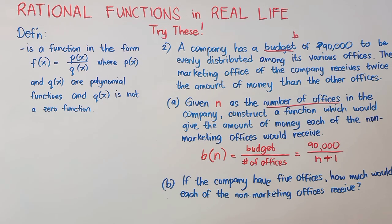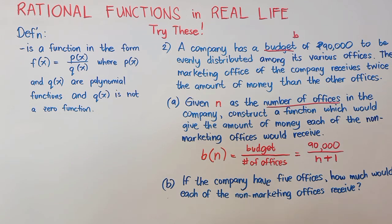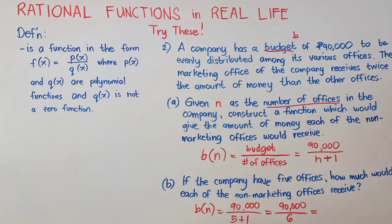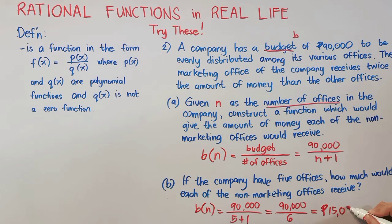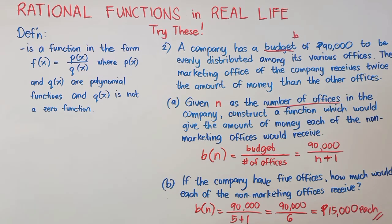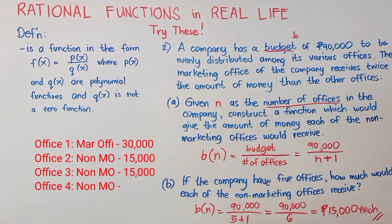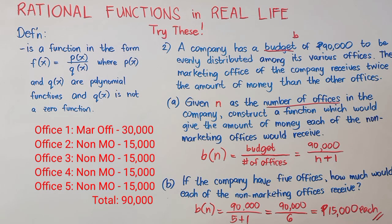Now, let's have B. If the company have 5 offices, how much would each of the non-marketing offices receive? Now, we will be using our function in A where our N is 5. So, we have here 90,000 divided by 5 plus 1 is 6. That will give us 15,000. So, each of the non-marketing offices receive 15,000 pesos each. So, here's the breakdown of the budget. The marketing office will receive 30,000 pesos and the rest of the non-marketing offices will receive 15,000 pesos each, a total of 90,000 pesos.